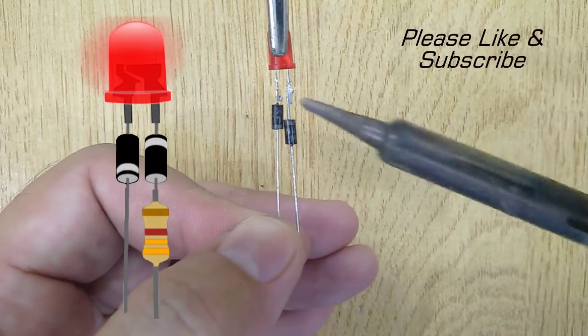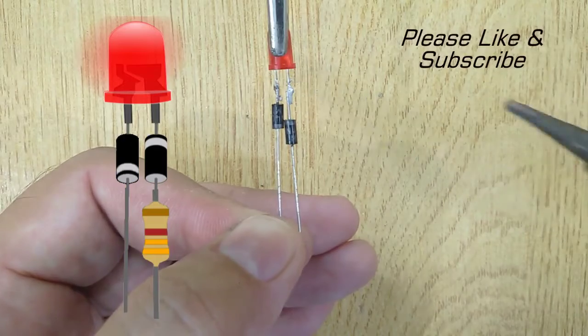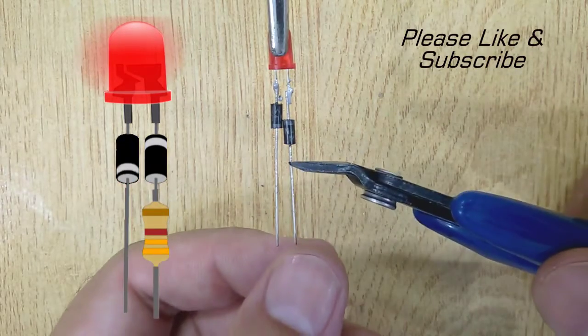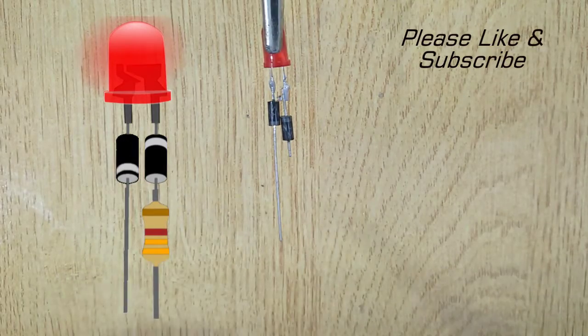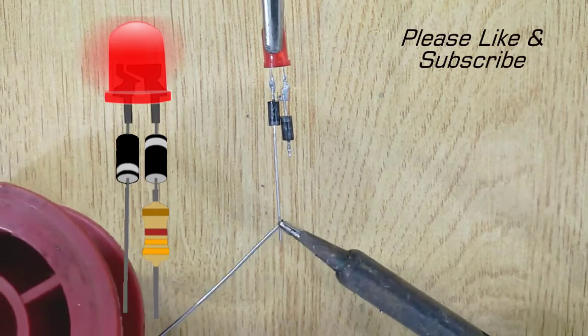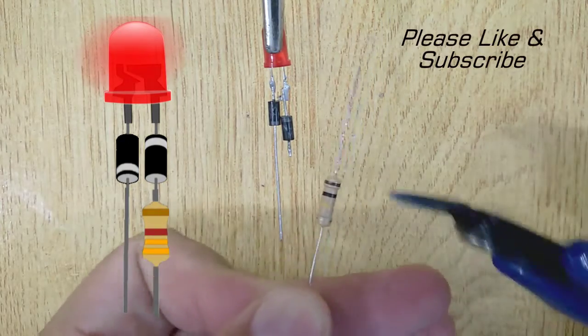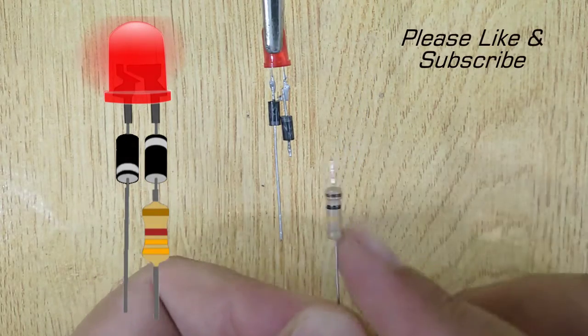Then solder another diode with the negative end of LED. Then solder the 100K resistor with the first diode.